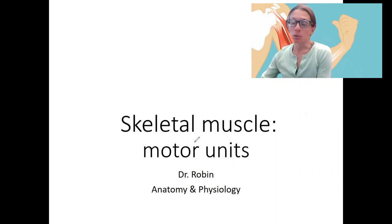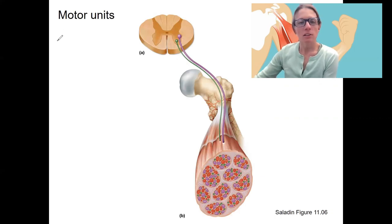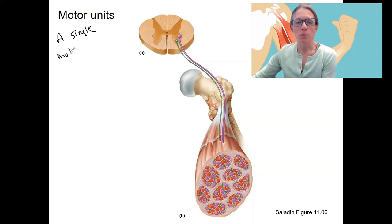So this is increasing the number of motor units in order to increase force. What is a motor unit? It is a single motor neuron and all of the muscle fibers that it innervates as a unit so that they're contacted, innervated.